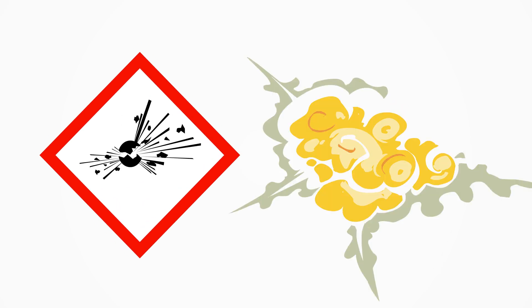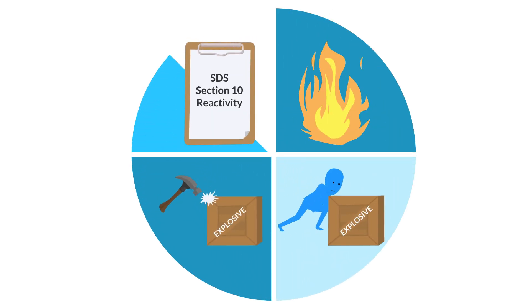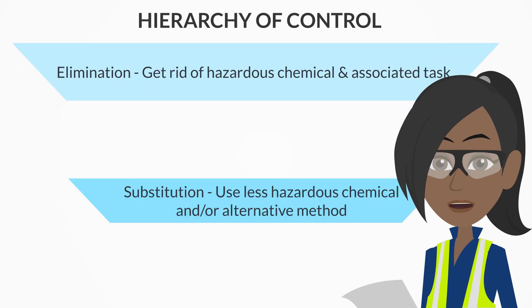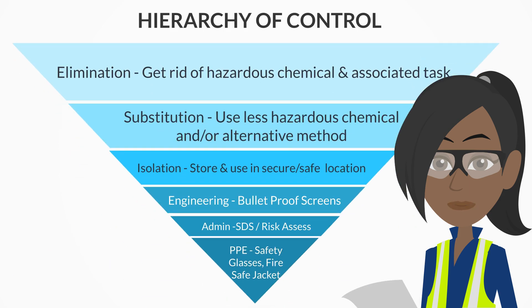An explosive label indicates substances that react very violently, releasing large amounts of energy and high-velocity projectiles. The critical hazards are heat, friction, impact, and conditions listed in Section 10 of the SDS. Other considerations are that users seek specialist advice and undertake hazard mitigation training.